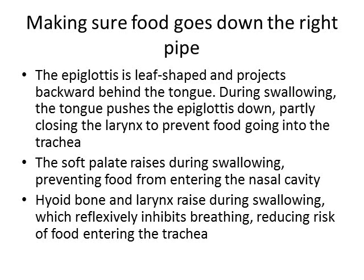We have something called an epiglottis, just above your voice box, which is a leaf-shaped structure that projects backwards just behind the tongue. When you swallow, the tongue pushes this epiglottis down, it partly closes the larynx, and that helps prevent food going into the trachea.